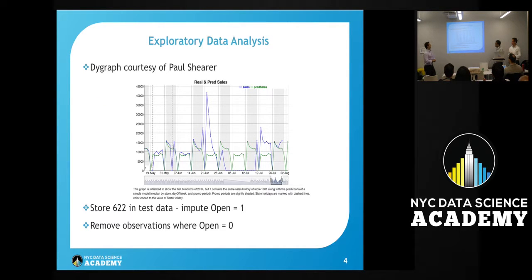To begin our EDA, we went through work that had previously been done to build on great models participants had already built. One great thing we found was a digraph by Paul Shearer showing a moving average. One key point we saw is how some stores had periods with no sales, actually due to refurbishment periods.